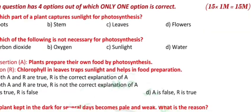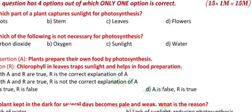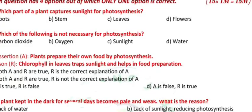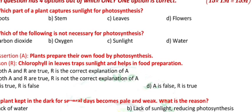Question 1: Which part of a plant captures sunlight for photosynthesis? a) Roots, b) Stem, c) Leaves, d) Flowers.